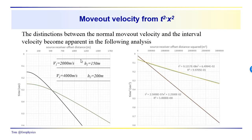We have this simple model, but we're going to look at two reflections now. We have a reflection from the near-surface layer with a velocity of 2,000 meters per second, and then another reflection from the base of a layer that has a velocity of 4,000 meters per second. We should come back and review some basic ideas here.